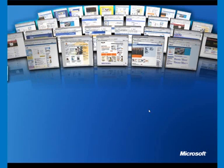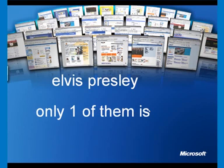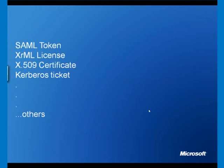We talked earlier about the lack of consistency of experience — every time you're asked for your identity, information is presented differently. And we get to the problem of Elvis Presley: there are 40,000 Elvis Presleys registered at Hotmail and only one of them is real. That gives us a problem with self-asserted identity. Now let's look at self-asserted identity, any type of asserted identity, and the idea of tokens.